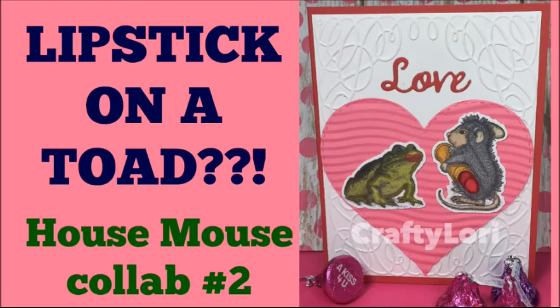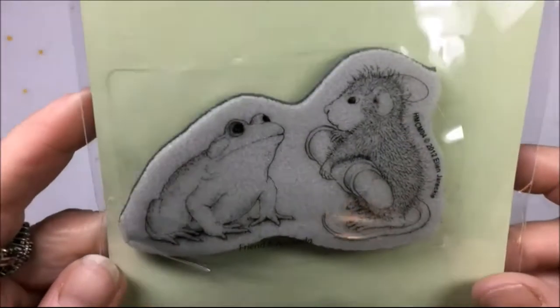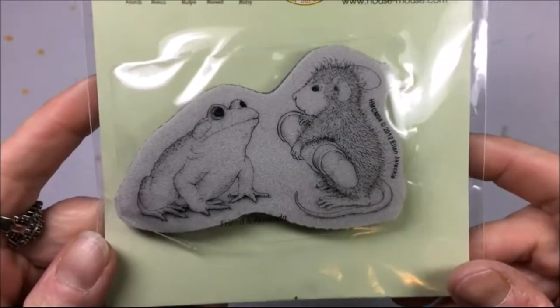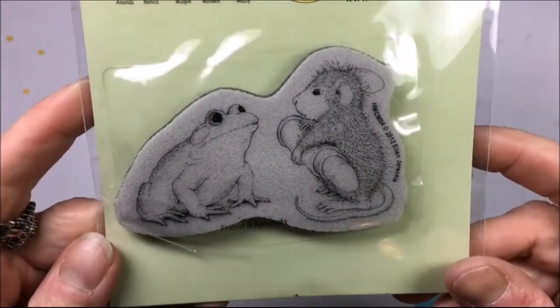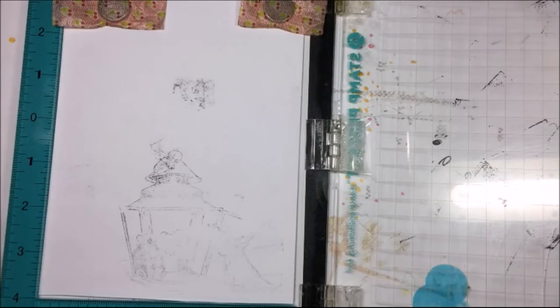The theme for February was hearts so I made a heart valentine card. This is the House Mouse stamp I chose and it's called Total Makeover. I'm starting out with my stamping tool.